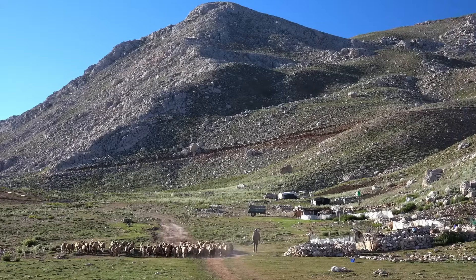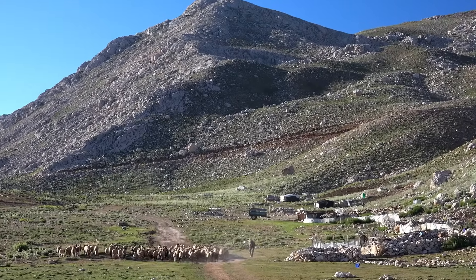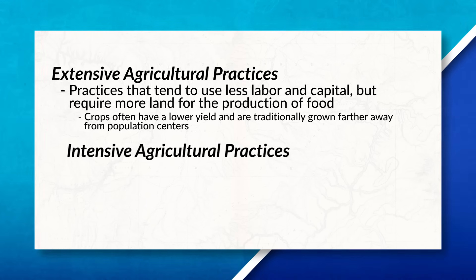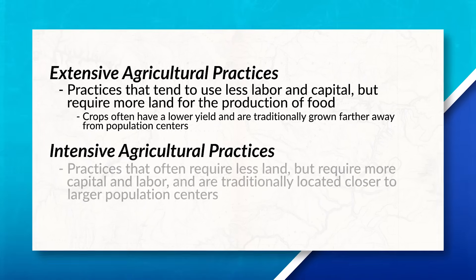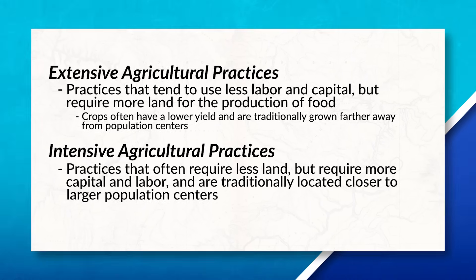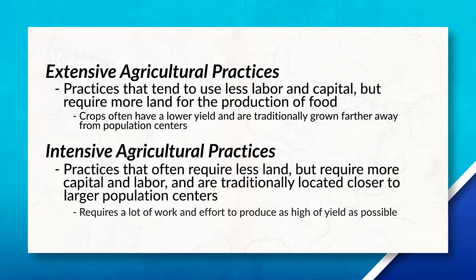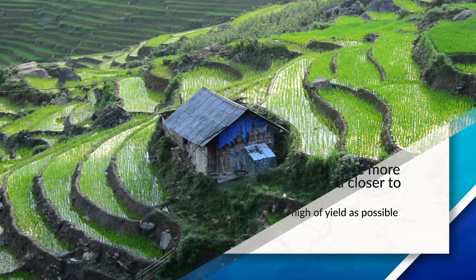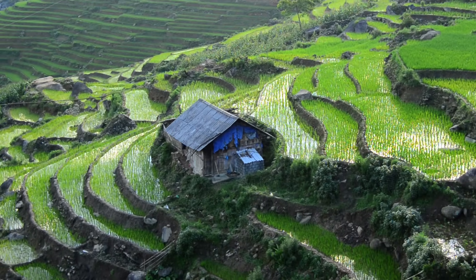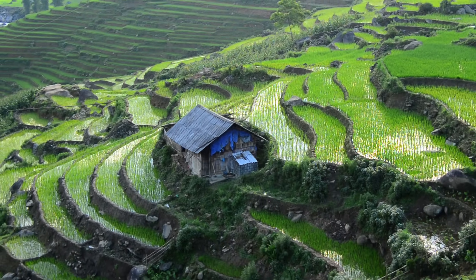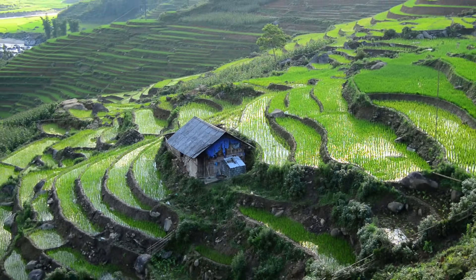An example of extensive subsistence agriculture would be pastoral nomads. Intensive subsistence agricultural practices, on the other hand, tend to use less land and more human labor, and may require more capital — such as intensive subsistence with wet rice farming and terrace farming in parts of South Asia.